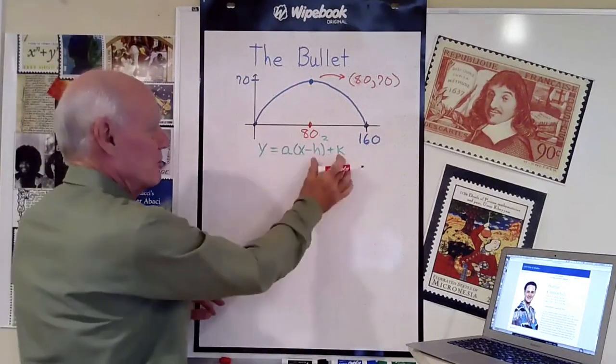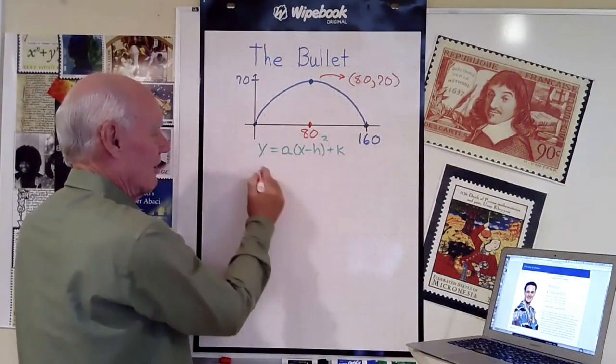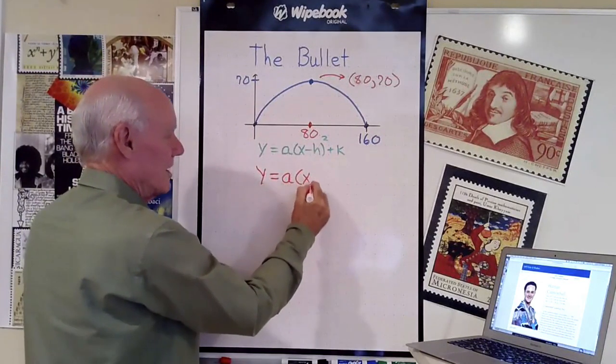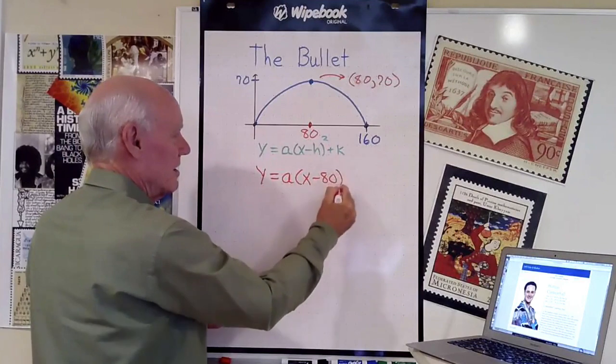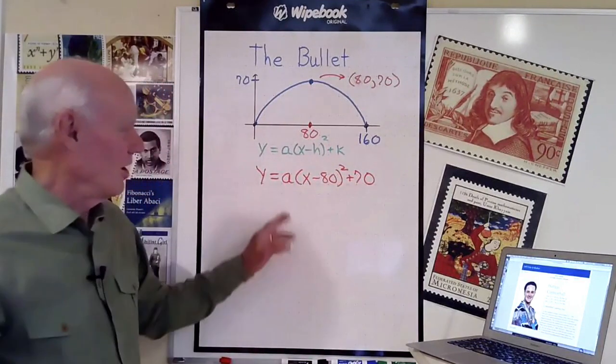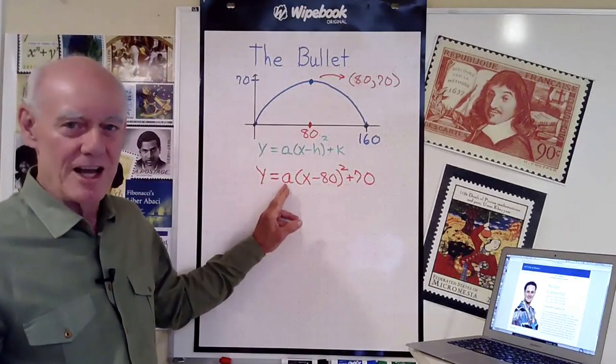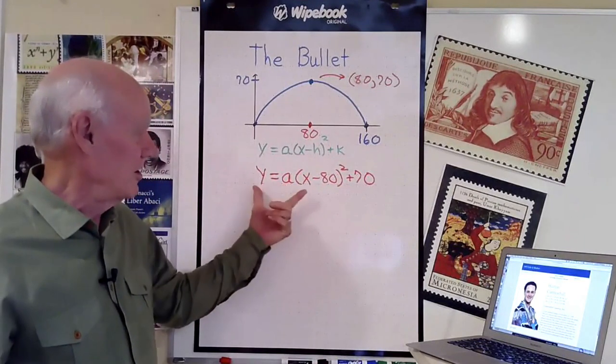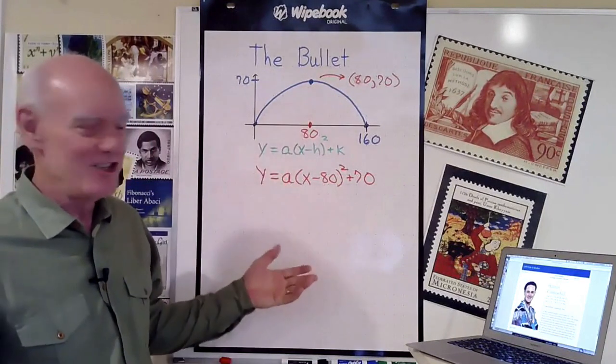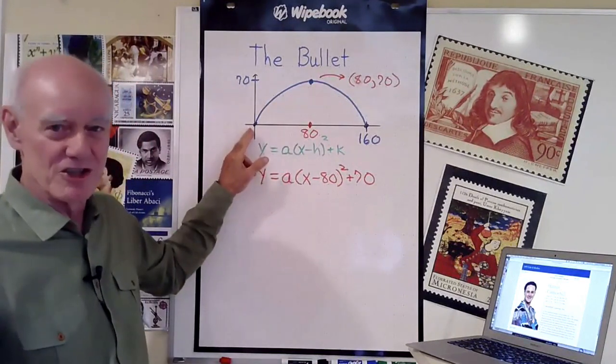We've got these two constants taken care of. I'll rewrite the equation as y equals a times (x minus 80) squared plus 70. All I have left to do is find a. To do that, I need one other point on the curve other than this point. Let's make it easy and take the origin (0,0).